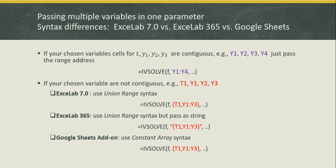Another difference between ExcelApp 7 and ExcelApp 365 and Google Sheets is the way you combine multiple variables into one reference. In ExcelApp 7, you can use the union range syntax to combine non-contiguous variables like t1, y1, y2, and y3. However, this syntax is not supported in ExcelApp 365 or Google Sheets. In ExcelApp 365, you can still use the union range syntax but must pass it as a string value. In Google Sheets, you pass the same syntax enclosed in curly brackets. If your variables are in a contiguous range, you can simply pass the range address in any version of ExcelApp.